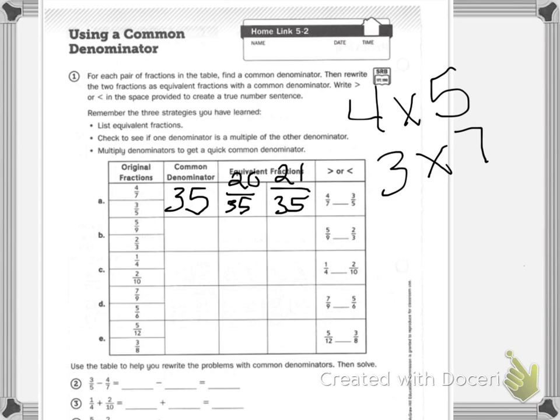So I know 4 sevenths is less than 3 fifths. Now we can always go back and check our work with a picture and you can see that.